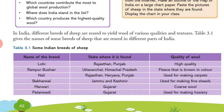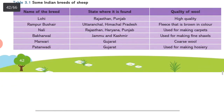Rampur Bushair from Uttaranchal and Himachal Pradesh has fleece that is brown in color. Nali from Rajasthan, Haryana and Punjab is used for making carpets. Bakharwal from Jammu and Kashmir is used for making fine shawls. Marwadi from Gujarat gives coarse wool. Patanwadi from Gujarat is used in making hosiery garments.